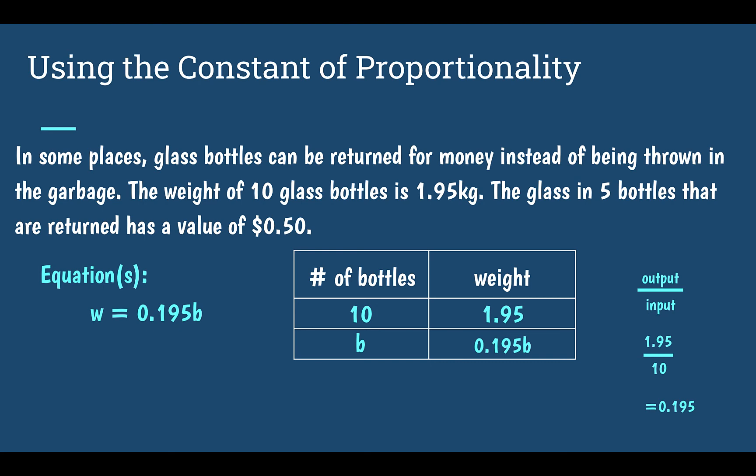If I want to create my other equation and figure out what B is equal to, I just need to use my reciprocal constant of proportionality. So B would be equal to 1 over 0.195, times W — the reciprocal constant of proportionality.